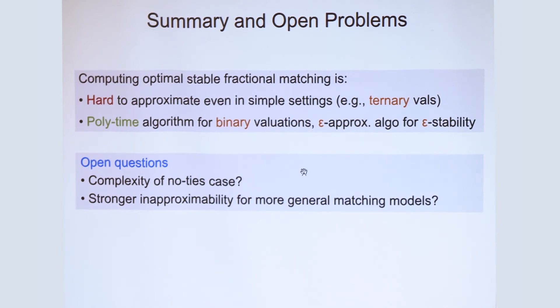There are a couple of interesting open questions. So the hardness results that I described to you were for ternary valuations, meaning if there are many agents, there could be ties in the preferences. So what happens when there are no ties, when the cardinal preferences for every agent are strict?